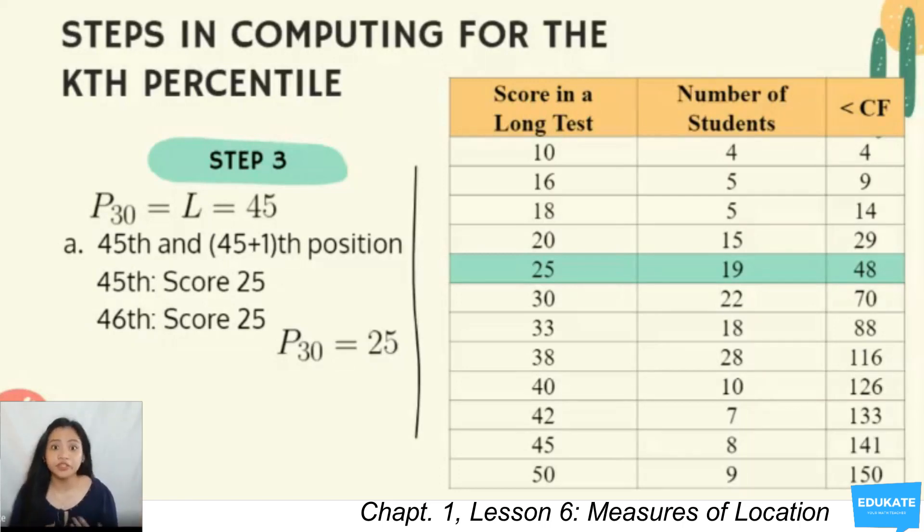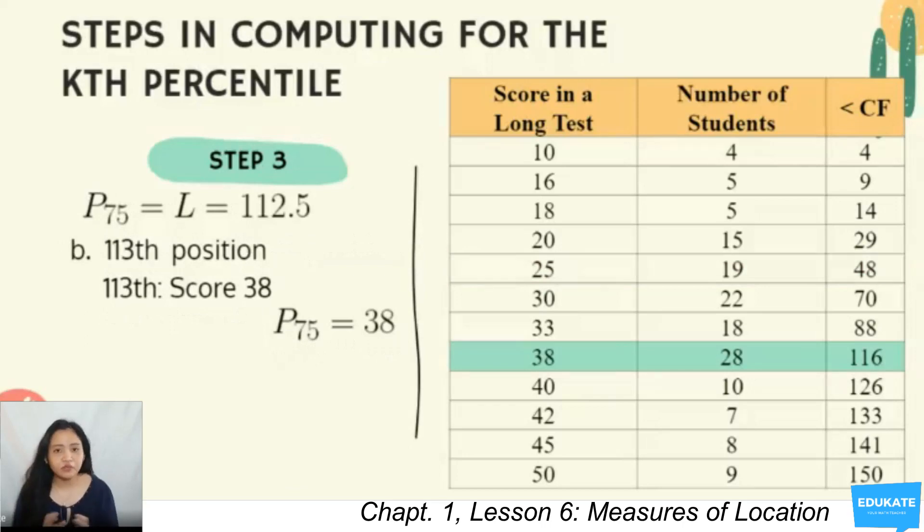That means our P30 is 25. We then say that the bottom 30% of the scores are said to be less than or equal to 25, while the top 70% of the observations, which is around 105, are greater than 25.